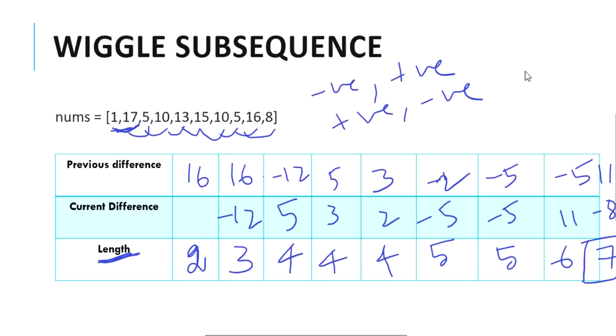Before getting into code, this solution works in linear time as we are iterating our array only once, and works in constant space. Let's see the greedy code now.